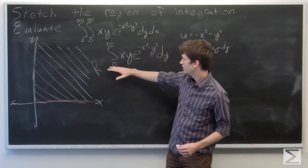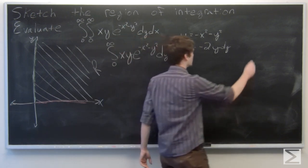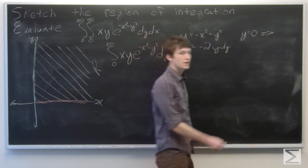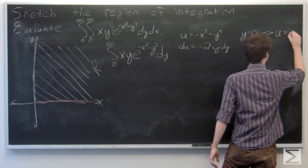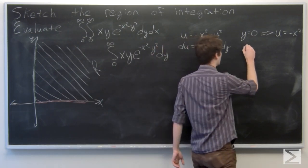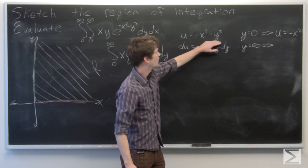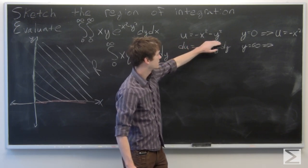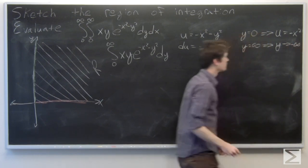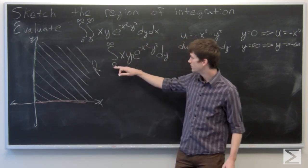We need to adjust our limits of integration. Our lower limit is when y equals 0, which implies u equals negative x squared. Our upper limit is as y goes to infinity: negative x squared minus y squared goes to negative infinity. So u ranges from negative x squared to negative infinity.